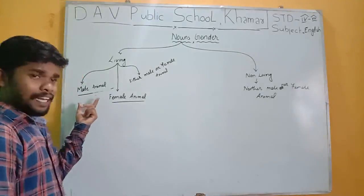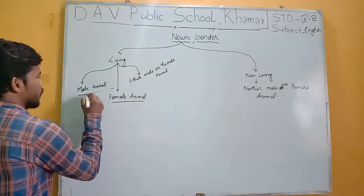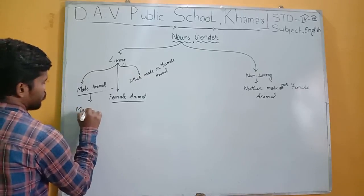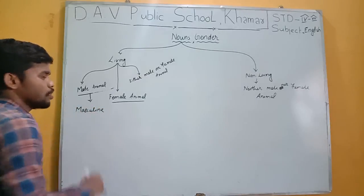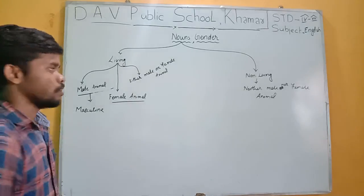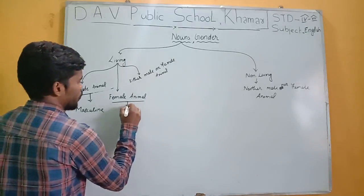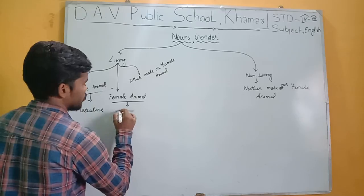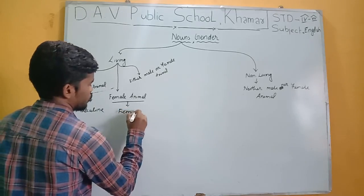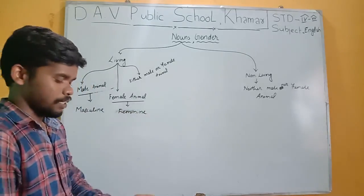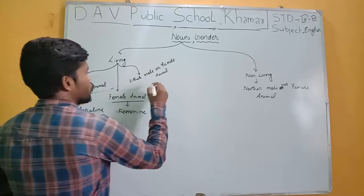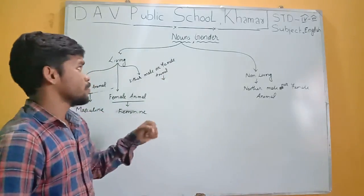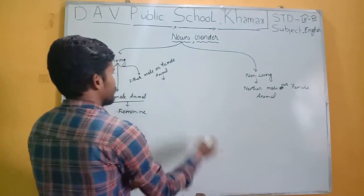To a male animal, we can say masculine gender. To a female animal, we can say feminine gender. And to that noun which is neither male nor female, we can say that this is common gender.